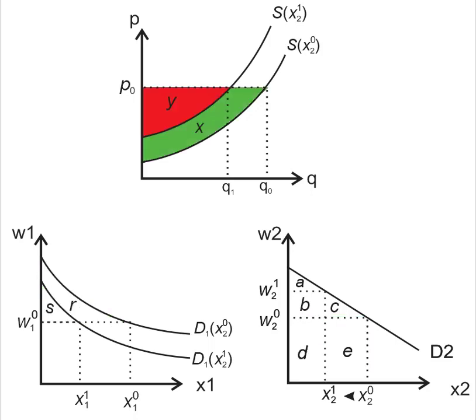We can do the same thing in the output market. Surplus falls from Y plus X down to just Y, leading to a reduction in surplus measured only by the area X. But again, our fixed costs are reduced, and so area E needs to be added back in.